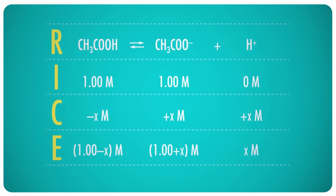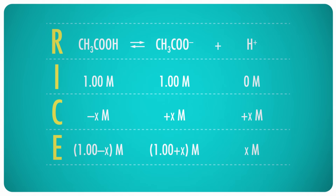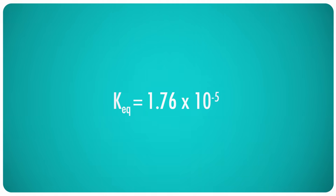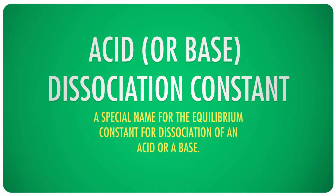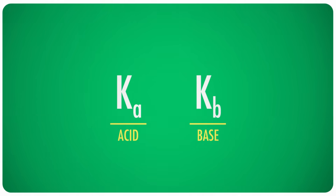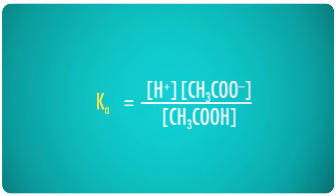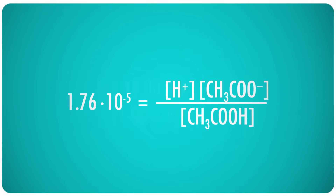So our concentrations at equilibrium E are 1 minus x, 1 plus x, and simply x in that order. Now let's put the numbers into the equilibrium formula: 1.76 times 10 to the negative fifth. When chemists work with dissociation equations for acids and bases, they give the K-eq a special name — the acid or base dissociation constant. The symbol for this kind of equilibrium constant is Ka for an acid or Kb for a base. So use the equilibrium expression for acetic acid and put in the Ka and the equilibrium concentrations from the RICE table.